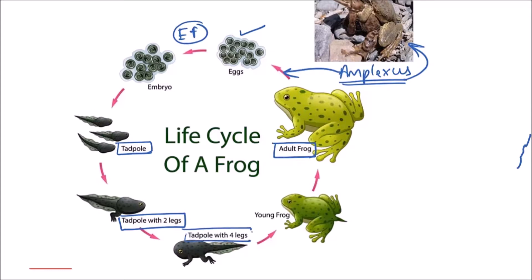The tadpole will develop legs — first two legs will grow, then another two legs will grow, and the tetrapod tadpole will finally develop into a young frog under the influence of thyroxine hormone, which requires iodine in the water. Finally, this young frog will grow into an adult frog.